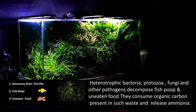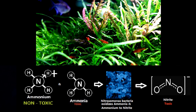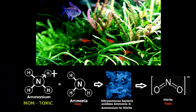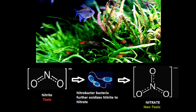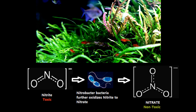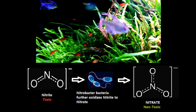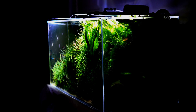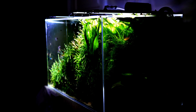The beneficial bacteria present in your tank converts ammonia to another toxic by-product, nitrite. Toxic nitrite is then further oxidized to non-toxic nitrate. So you need sufficient beneficial bacteria in your aquarium to successfully convert toxic ammonia and nitrite to non-toxic nitrate. This conversion process is called the nitrogen cycle.